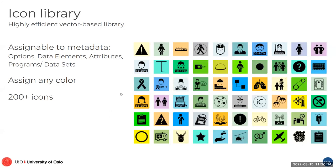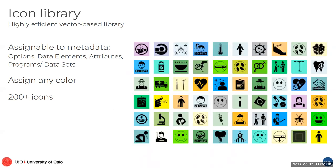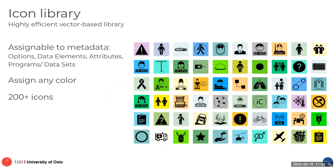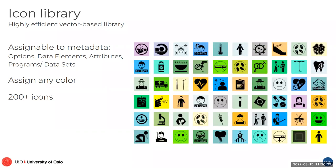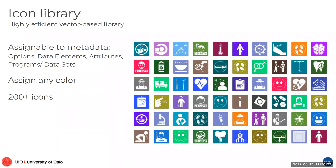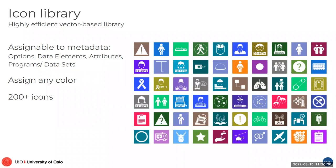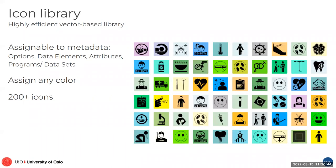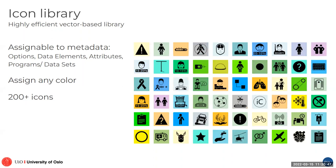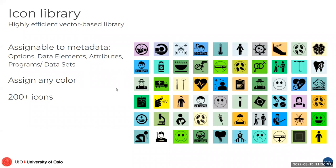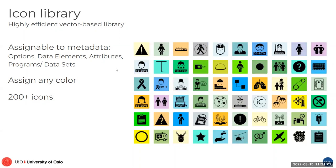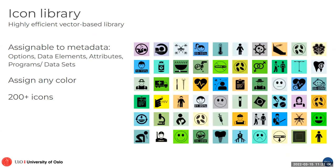We also have an icon library with more than 200 icons. They have been designed to be very high-efficiency — they all have the same structure, the same width of lines, and they are very well structured in order to cover all the icons you could need for different programs in health and education. You can assign these icons to your different data elements, programs, data sets, options, and attributes. You will be able to see them and it will be easy to recognize your different metadata.